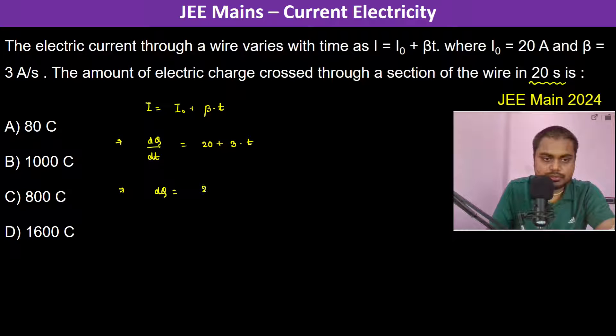dQ becomes 20 plus 3T into dt. Now if we integrate it from 0 to 20 seconds.